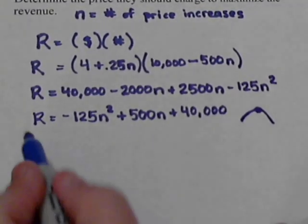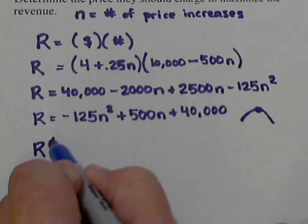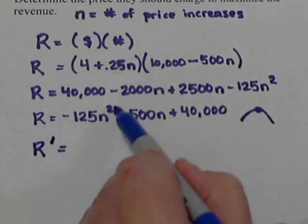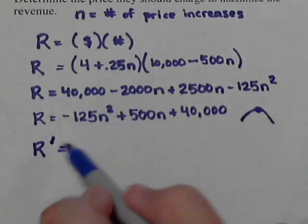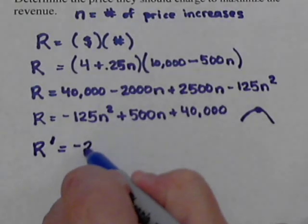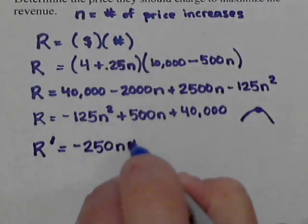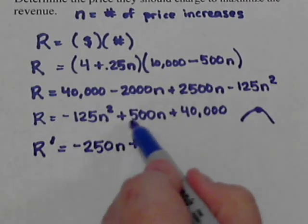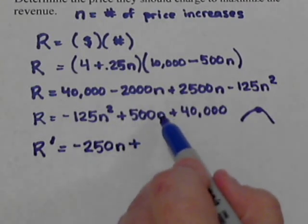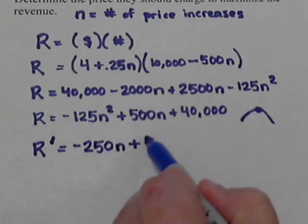So, let's take the derivative of our revenue equation. So, we bring the exponent down to the front. Negative 125 times 2, so that's negative 250n plus. This is a linear term, and the derivative from that, we just drop the variable and we're left with just the 500.